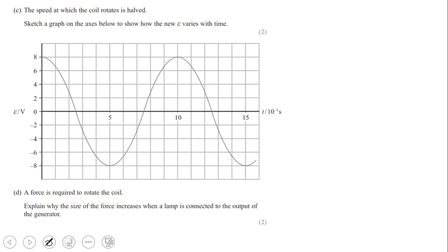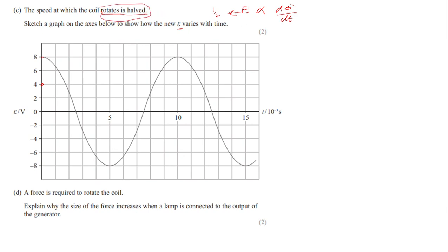The rotation speed is halved. Sketch the new e–t graph. Since EMF is directly proportional to rate of change of flux, halving the speed halves the EMF — the peak drops from 8 V to 4 V. The coil also rotates more slowly, so the period doubles. The point previously at t = 2.5 ms moves to t = 5 ms, giving a sinusoidal wave with half the amplitude and double the period.